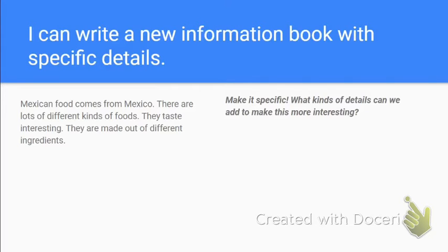Let's practice making this a little bit more specific. Here's some vague writing about Mexican food: 'Mexican food comes from Mexico. There are lots of different kinds of food. They taste interesting. They're made out of different ingredients.' Each of these sentences contains an opportunity to make the writing more specific. Pause the video and see if you can come up with something more interesting to say than 'Mexican food comes from Mexico.' How can we be more specific?